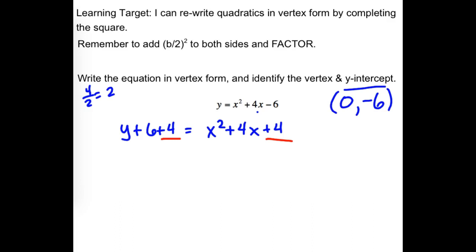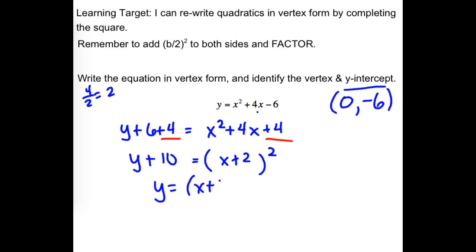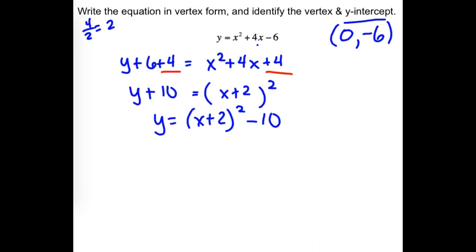The right side has turned into a perfect square trinomial — it factors into two identical factors. The left side, combining like terms, gives y plus 10. Subtract the 10 back over: y equals (x + 2)² minus 10. We moved it left 2 and down 10, so the new vertex is at (−2, −10).